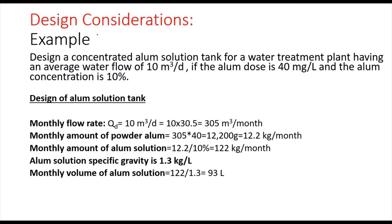Now let's see a practical example of how I can design an alum solution tank. We have to design a concentrated alum solution tank for a water treatment plant that has an average flow rate of 10 cubic meters per day. The alum dose is 40 milligrams per liter, and we can get this value using a jar test.